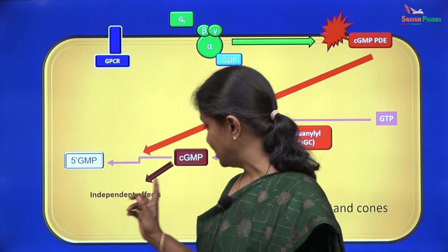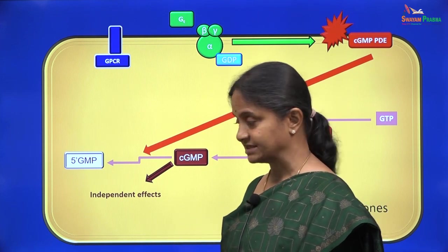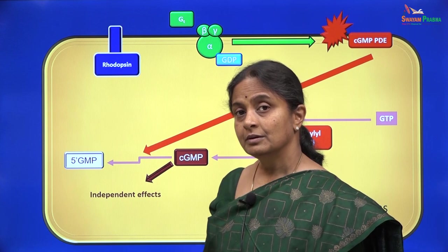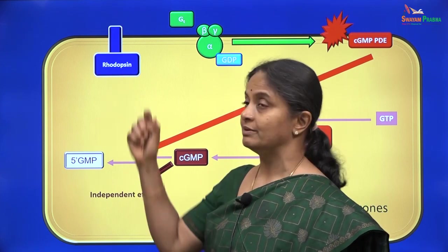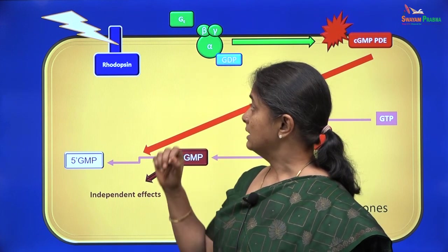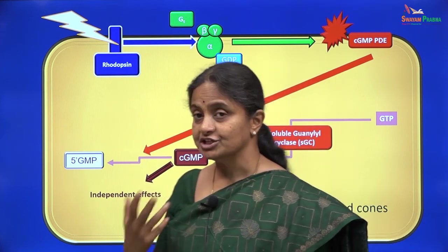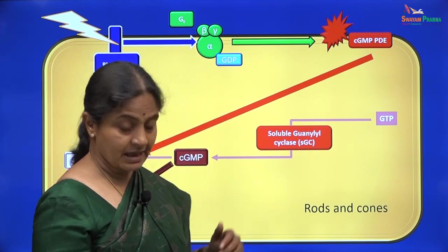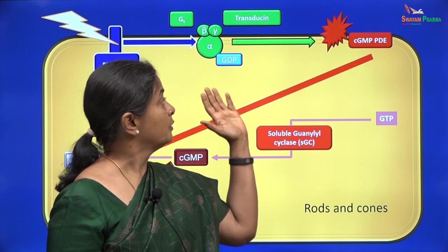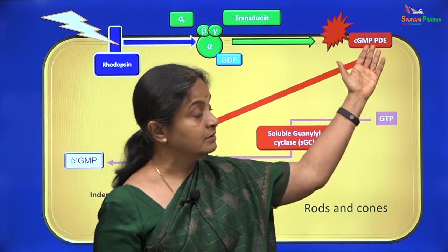In rods and cones, the actions of cGMP are independent of protein kinase G — at least the actions we will discuss. The G protein coupled receptor, or the protein on the membrane which responds to light, is what we call rhodopsin in the rods. Light striking on rhodopsin will activate the G protein, the GT type of G protein, and that gets the special name transducin — the T here is actually for transducin. Once this G protein is activated, the alpha subunit will move along the membrane and activate a membrane enzyme.